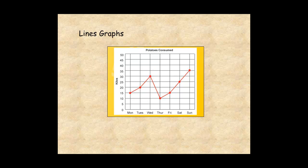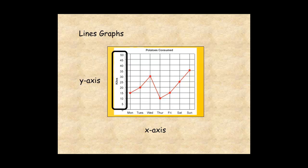A line graph is a kind of graph that contains two or more data points connected by lines. The individual data points represent the relationship between data on the x-axis and data on the y-axis. In this example, the graph shows the relationship between days of the week on the x-axis and kilograms of potatoes consumed on the y-axis in a certain restaurant.